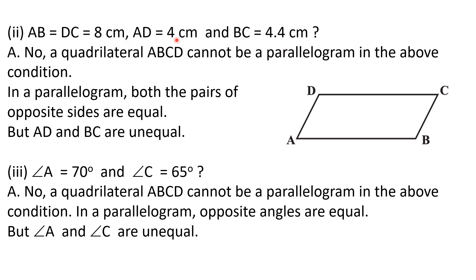Part number three: angle A is equal to 70 degrees and angle C is equal to 65 degrees. The answer is no — quadrilateral ABCD cannot be a parallelogram under this condition. In a parallelogram, opposite angles must be equal: D must equal B, and A must equal C. But here A is 70 degrees and C is 65 degrees, so they are unequal.